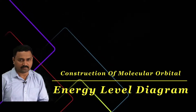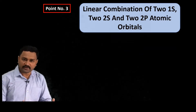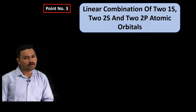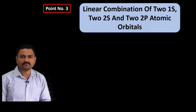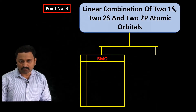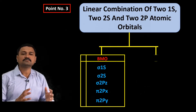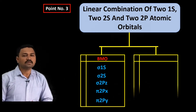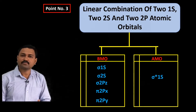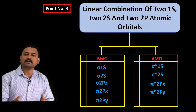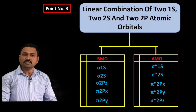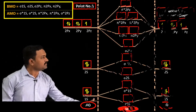Point number three: the construction of the molecular orbital energy level diagram. The linear combination of two 1s, two 2s, and two 2p (that is 2px, 2py, and 2pz) atomic orbitals of both fluorine atoms gives 10 molecular orbitals. Five are bonding molecular orbitals: σ1s, σ2s, σ2pz, π2px, and π2py. The remaining five are antibonding molecular orbitals: σ*1s, σ*2s, σ*2pz, π*2px, and π*2py.